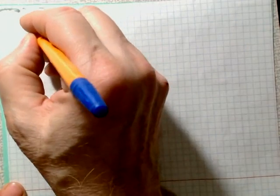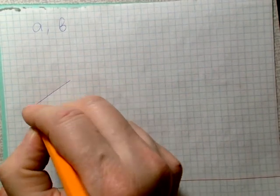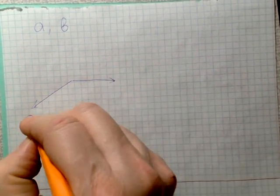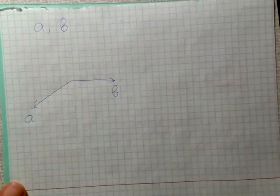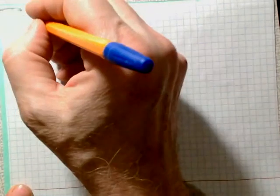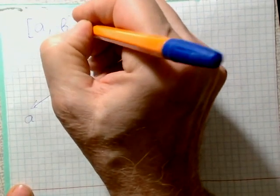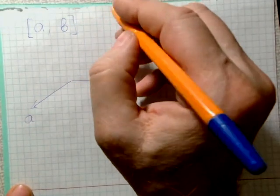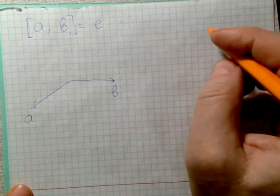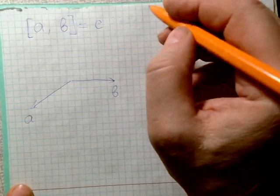Assume that we have two vectors a and b, and let's draw them so that they have a common initial point. The vector product will be denoted using square brackets, and this vector product will be some new vector c, which is defined through the following three conditions.